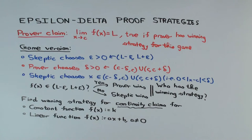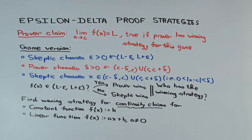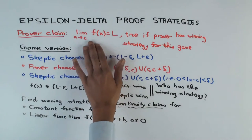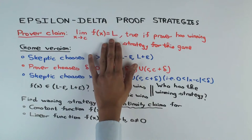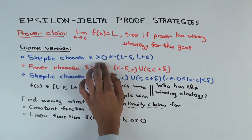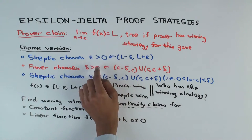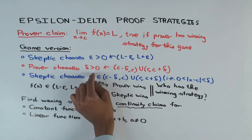Recall the epsilon-delta definition of limit. It says that the limit as x approaches c of f(x) is L if the following holds. Imagine you have a game with two players: the skeptic and the prover. The prover is trying to show the statement is true, and the skeptic is trying to find evidence that it's not true. The skeptic first picks an epsilon greater than zero, which is essentially picking a neighborhood of L. Then the prover chooses a delta greater than zero, which is like picking a neighborhood of c.